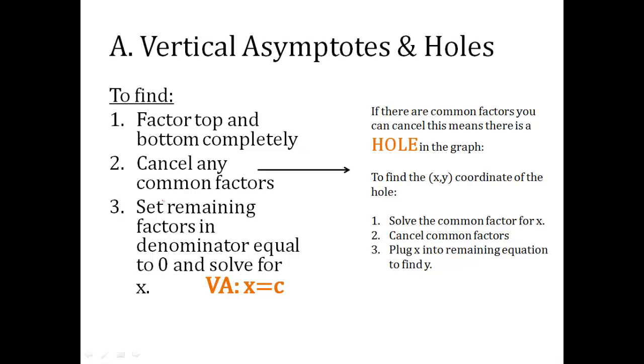Vertical asymptotes. To find a vertical asymptote, you're going to factor the top and the bottom completely. Cancel any common factors and then set remaining factors in the denominator equal to zero and solve for x. So we'll do lots of examples. But here's the rule: factor, cancel, set the denominator equal to zero.